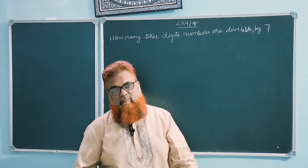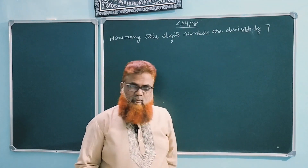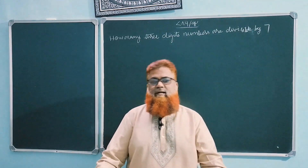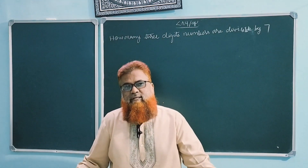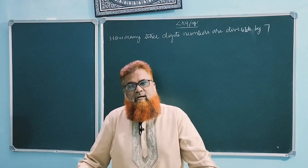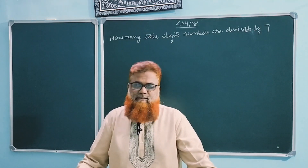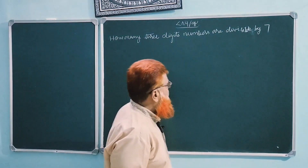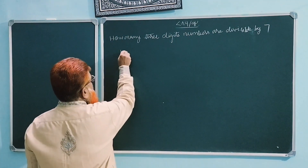3-digit number means what? We have 1 to 9 as single digits, 10 to 99 as double digits, and 100 to 999 as 3-digit numbers. So the first least 3-digit number is 100.